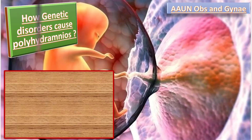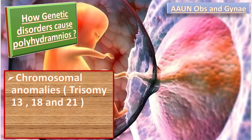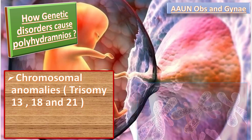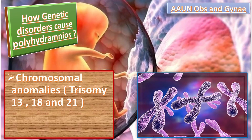How do genetic conditions cause polyhydramnios? In chromosomal anomalies like Down syndrome, Edwards syndrome, and Patau syndrome, the baby has structural abnormalities such as duodenal atresia or other blockages in the gastrointestinal tract, resulting in an increased amount of amniotic fluid due to poor swallowing.